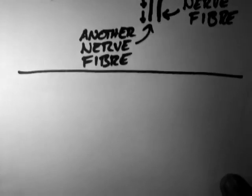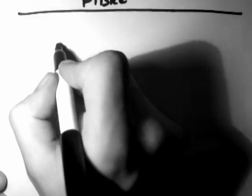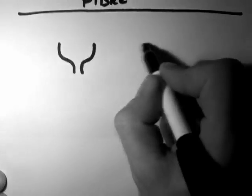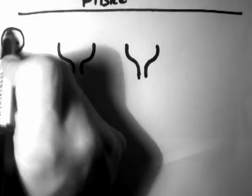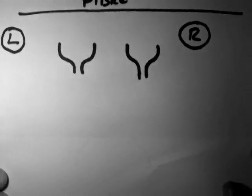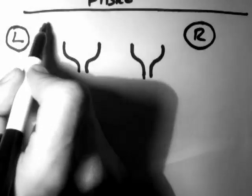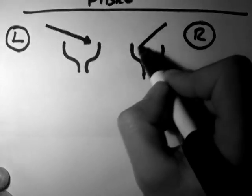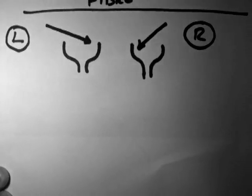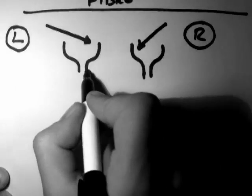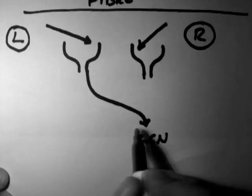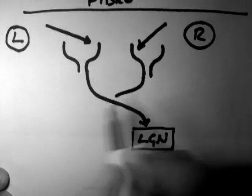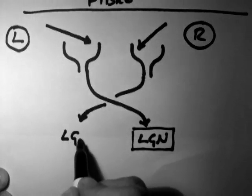To show the visual pathway, I'll need two of these — that is, two eyeballs. Here's my first and here's my second. This is left and this is right. Now I want to look at the situation when light comes in from the periphery and hits the retina of each eye that's closest to the nose, also known as the nasal retina. The information that hits these photoreceptors will travel down and across to the other side of the brain in the optic nerve, and this one will come across to the other side.